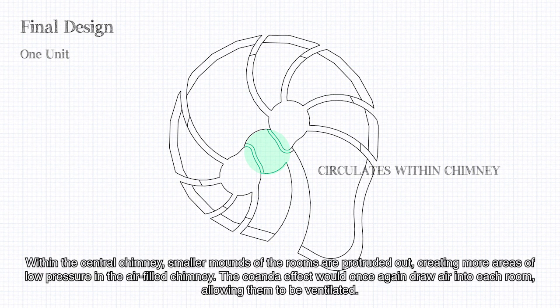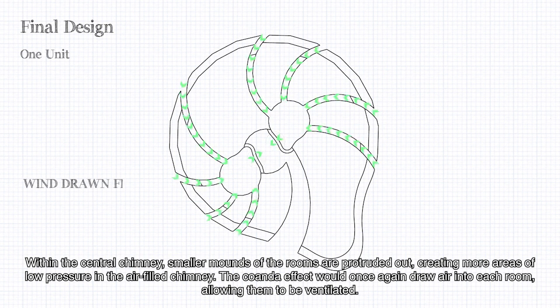Within the central chimney, small amounts of the rooms are protruded out, creating more areas of low pressure in the air-filled chimney. The Coanda effect would once again draw air into each room, allowing them to be ventilated.